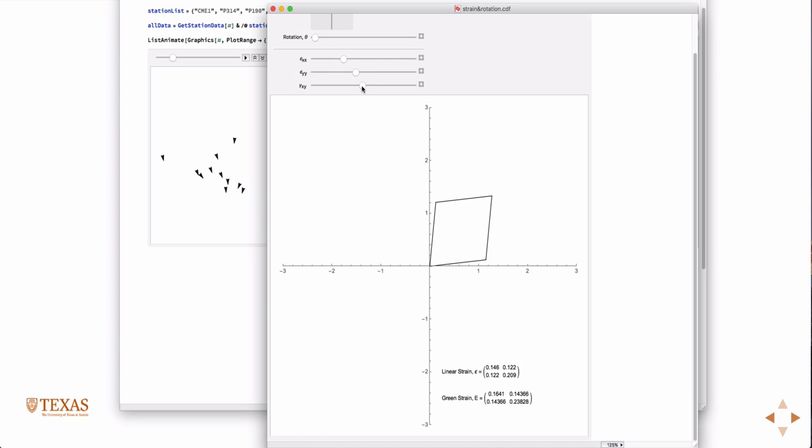And there's also something here called the Green strain. So this is something you learn about in graduate continuum mechanics. But the Green strain is valid for finite deformations, large deformations. And when the deformations are small, they're almost the same. So even here they're only different in the second decimal place. If I make the deformations smaller, they would be even less different. If the deformations are really small, they're pretty close to one another.